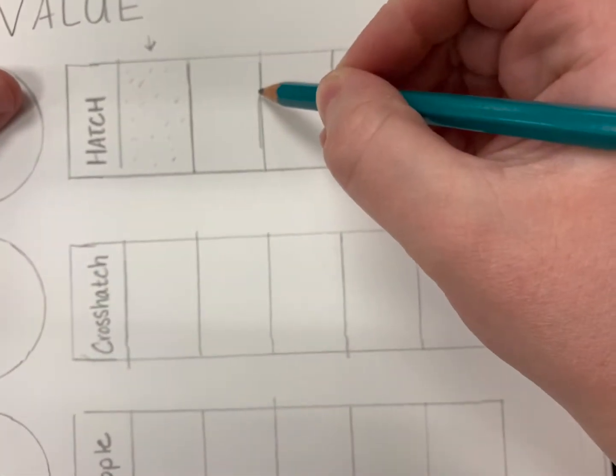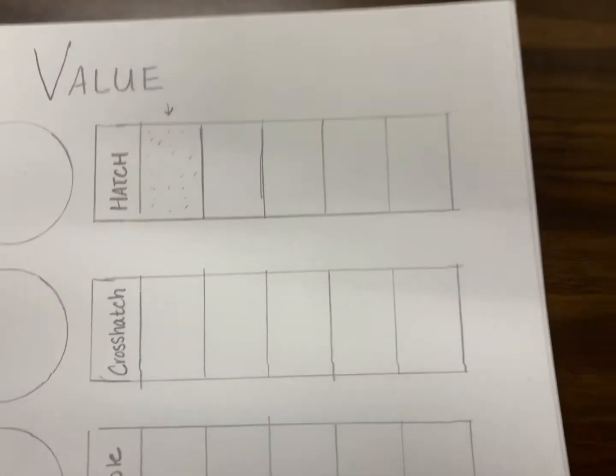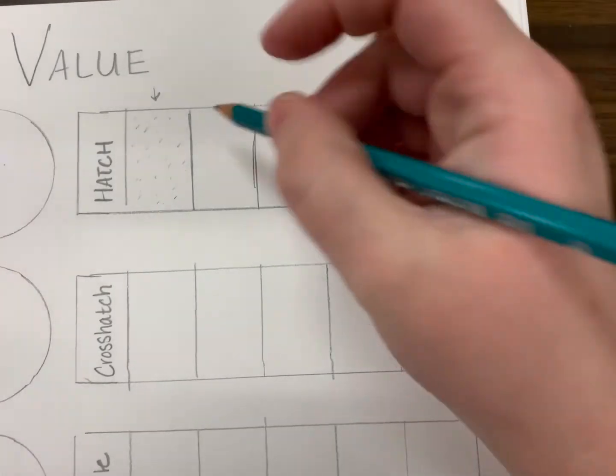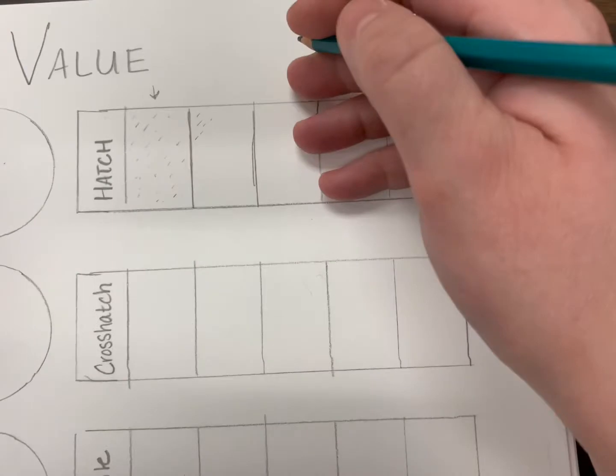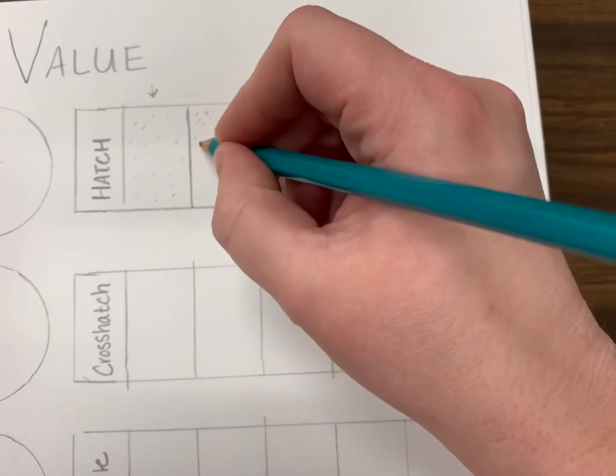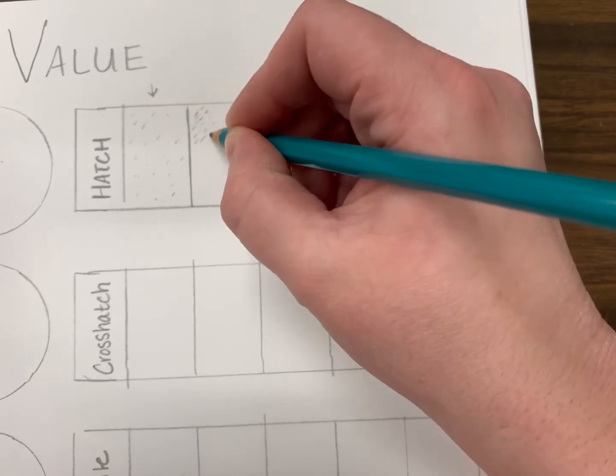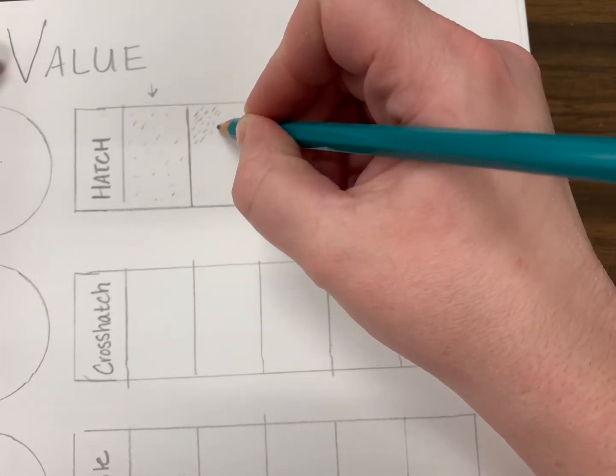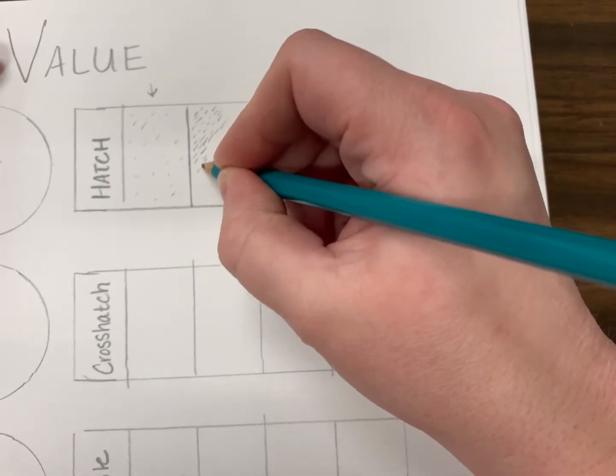Now as you get over to the next space, it should be getting a little bit darker. So my lines—the line could get longer, that's one way to do it, and also putting them closer together. Then you can also start applying more pressure to your pencil mark. You can also switch to a 4B pencil.